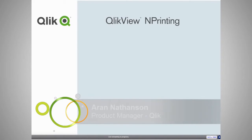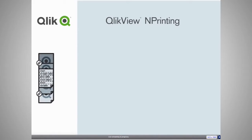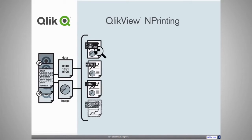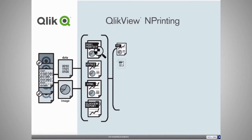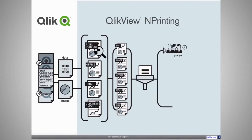As Chris said, this product handles printing, Microsoft Office integration, scheduling, and distribution for the QlikView platform. We can take objects from as many QVWs — both data and images — and drag and drop these into Microsoft Office, HTML, and pixel-perfect files. We can then render these out in a number of different formats including Microsoft Office documents, various images, PDFs, and HTML.